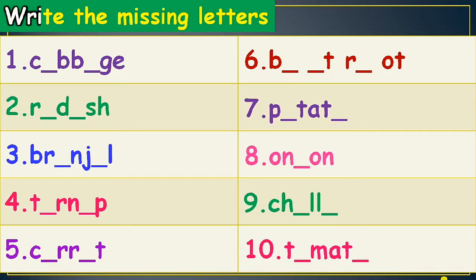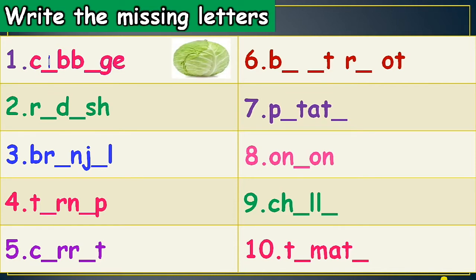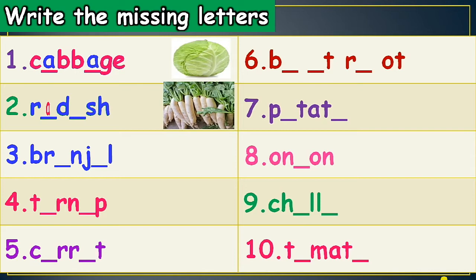Let us learn the first activity: write the missing letters. First one, it is cabbage — C A B B A G E, cabbage. Second one, it is radish — R A D I S H, radish. Third one, it is brinjal — B R I N J A L, brinjal.